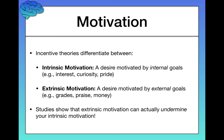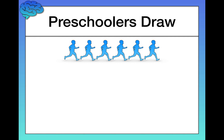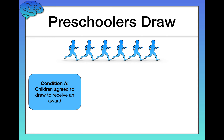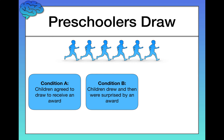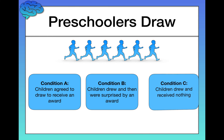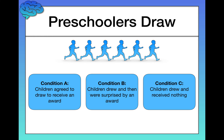To illustrate, let me talk about a classic study comparing intrinsic and extrinsic motivation in a developmental psychological context — with preschoolers as participants. In this study, preschoolers just drew. Kids of this age generally love to draw. There were three conditions. In condition A, children agreed to draw ahead of time to receive an award. In condition B, children drew and then were surprised by an award, but there was no prior agreement. And in condition C, children drew and received nothing — no mention of an award.